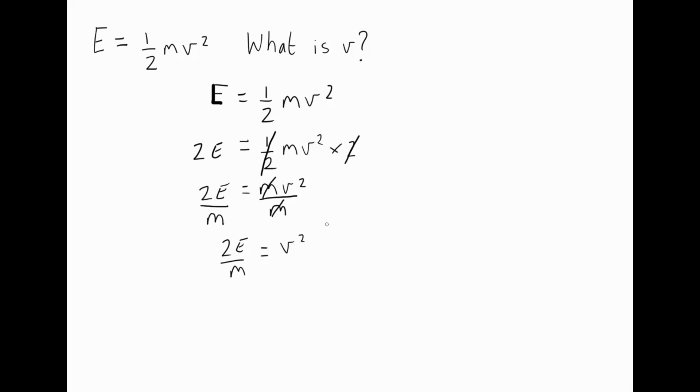Now the final thing we need to do is to get rid of this squared. Well to get rid of something squared, we can just square root it. So over here we can say the square root of V squared, and if we square root one side we must square root the other side. So instead of just writing 2E over M, it's the square root of 2E over M. Now if we can tidy this up a little bit, the square root of V squared, well that's just going to equal V.